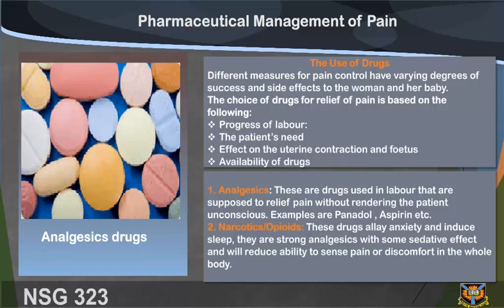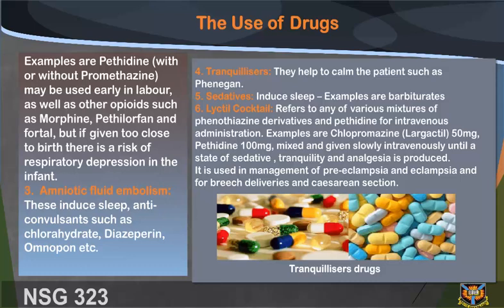1. Analgesics: these are drugs used in labor that are supposed to relieve pain without rendering the patient unconscious. Examples are Panadol, aspirin, etc. 2. Narcotics or opioids: these drugs allay anxiety and induce sleep. They are strong analgesics with some sedative effects and will reduce the ability to sense pain or discomfort in the whole body. Examples are pethidine with or without promethazine, which may be used early in labor, as well as other opiates such as morphine, pentazocine, and meptazinol.